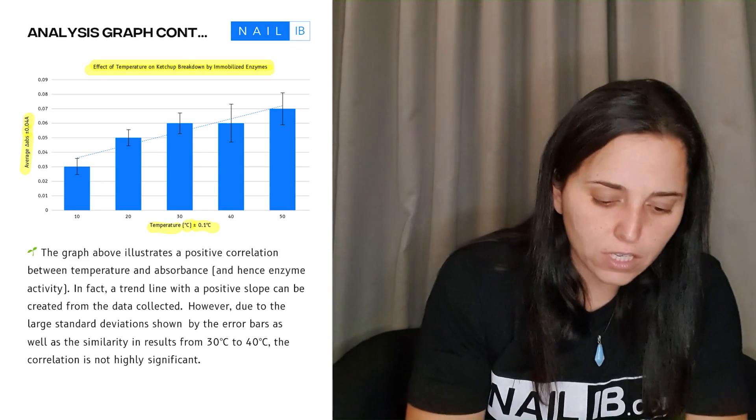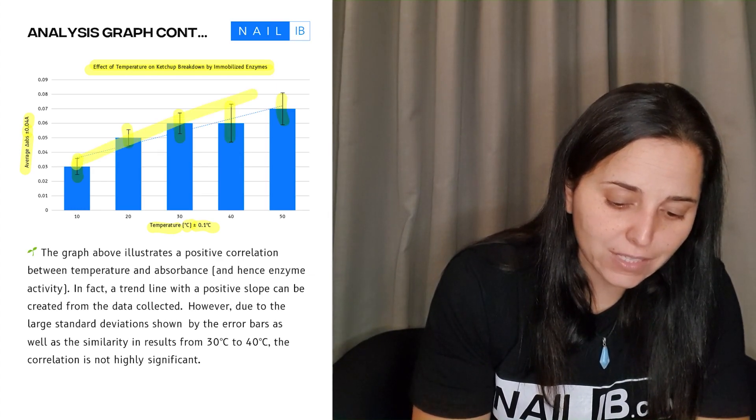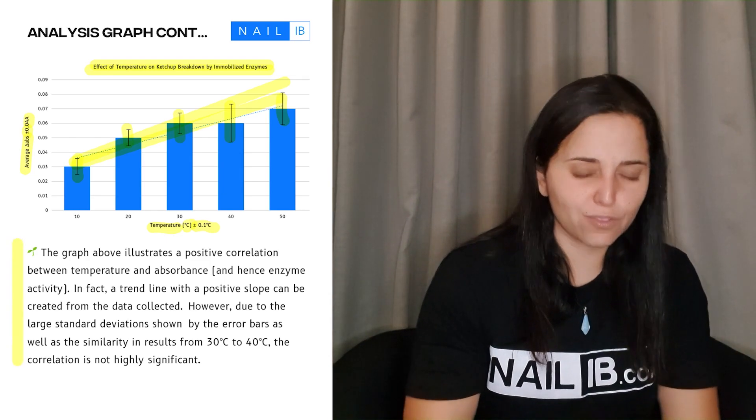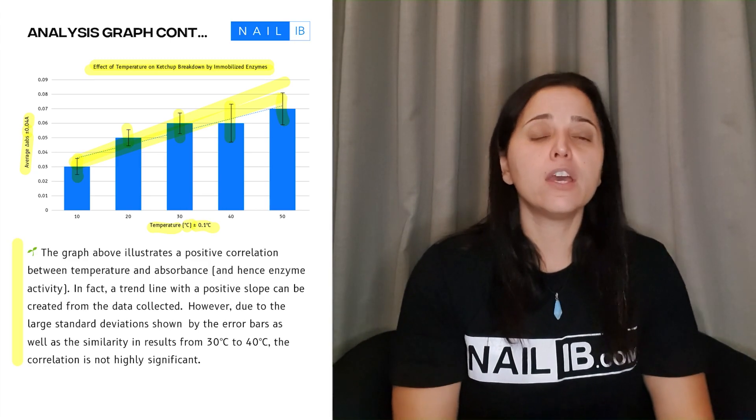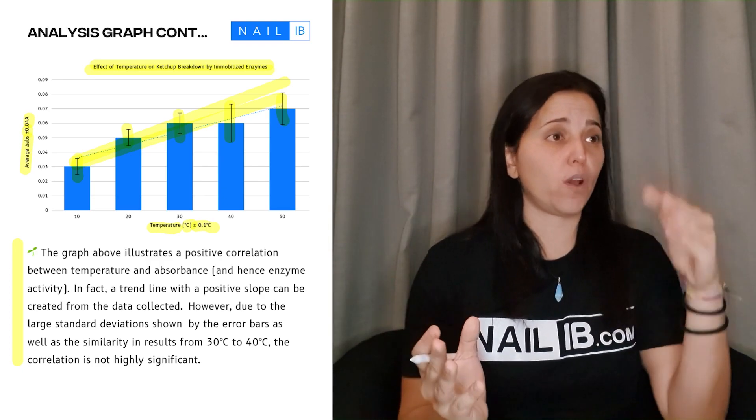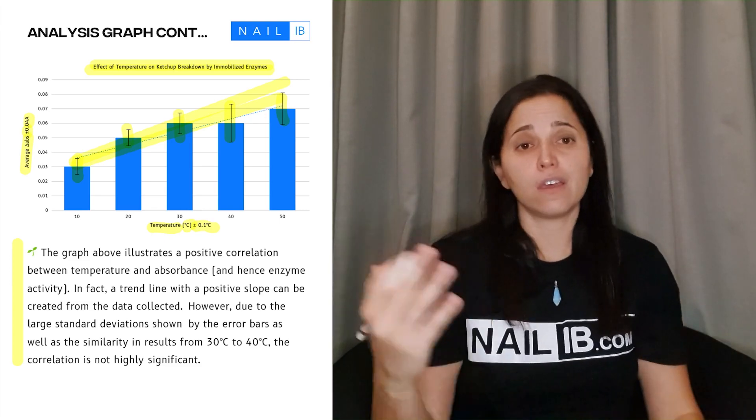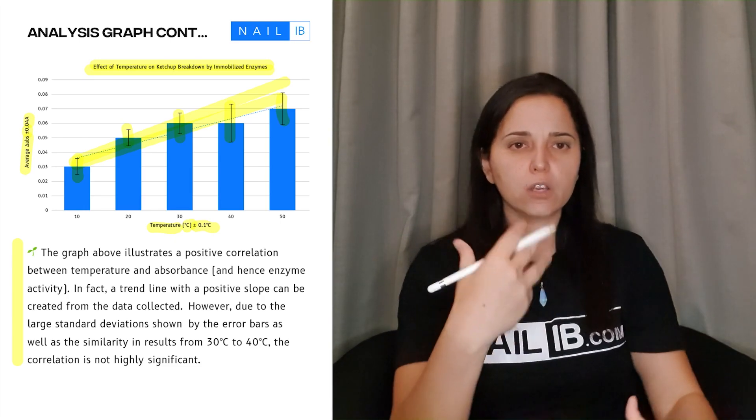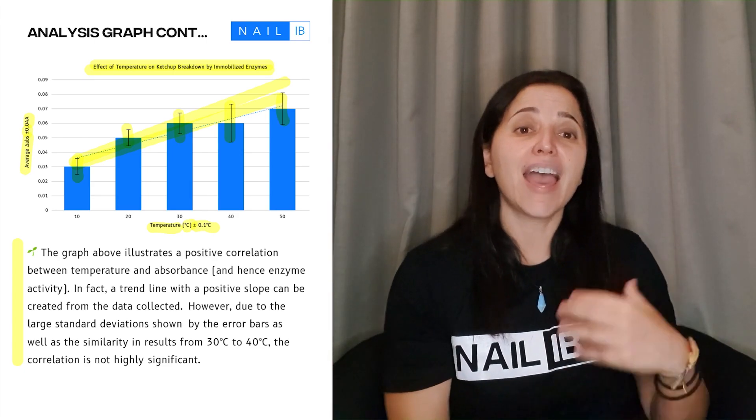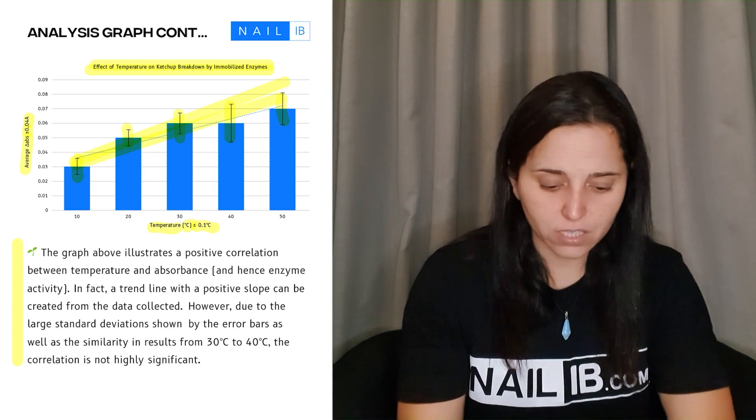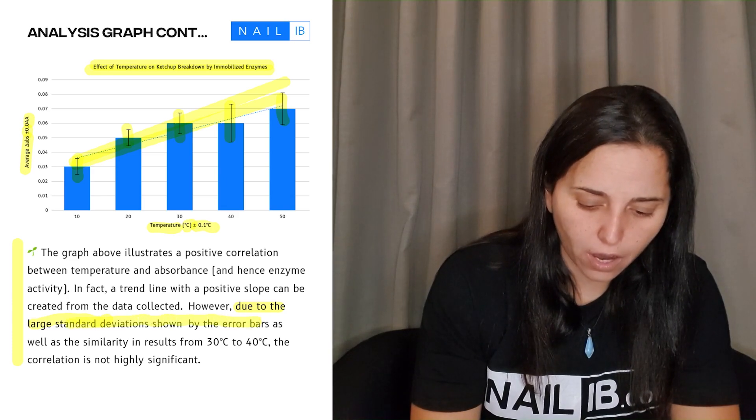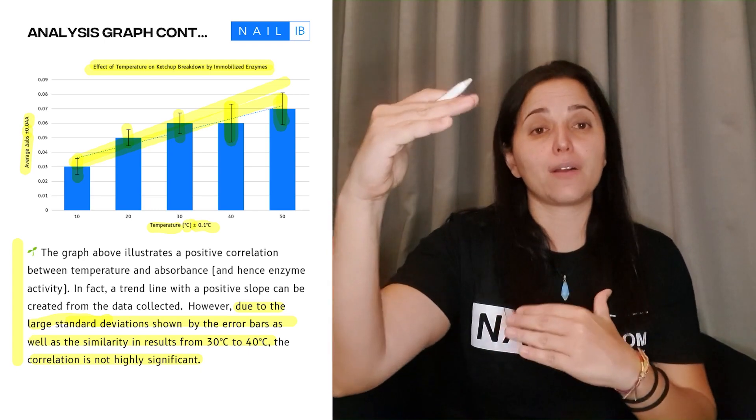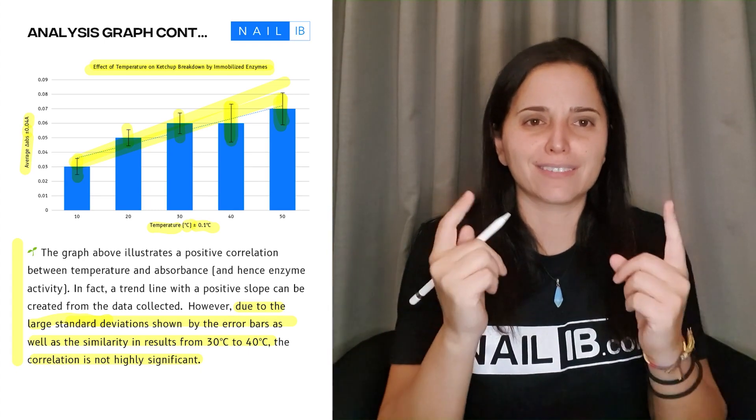Then you plug the graph. Usually, these graphs will have to have error bars or they can have trend lines. Under it is where students have a hard time explaining. What are you telling them in the graph? You're telling them a trend. Is there a positive correlation, which means if one increases, the other one is increasing? Or is it a negative correlation? One is increasing and the other is decreasing. Whatever is the relationship, you have to explain that. As you can see, as the temperature increases, the weight is dropping. Explain that. And then talk about the statistical value about this. Due to the large standard deviation and the error bars, as well as the similarity in results, the correlation is not highly significant. You can see that the bars are very big, which means they're almost the same.